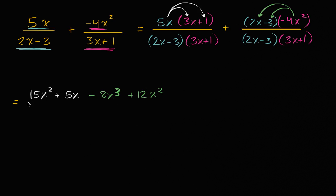And then our entire denominator, we have a common denominator now, so we were able to just add everything, is 2x minus 3 times 3x plus 1, times 3x plus 1.